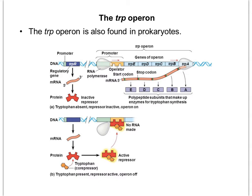If tryptophan is present in the cell, we don't need to make any more and we should turn the operon off. When tryptophan is present, it binds to the repressor and causes a shape change. That shape change allows the repressor to bind to the operator, which blocks transcription from happening.